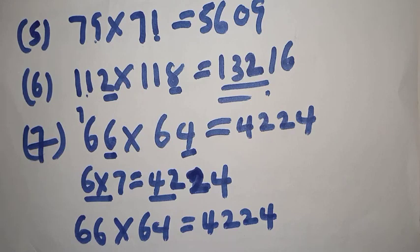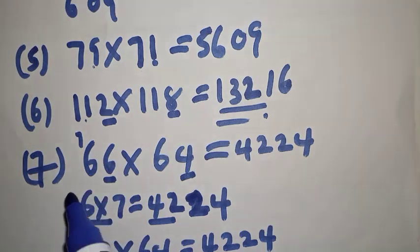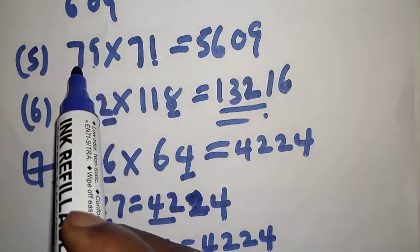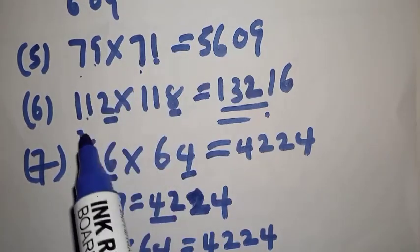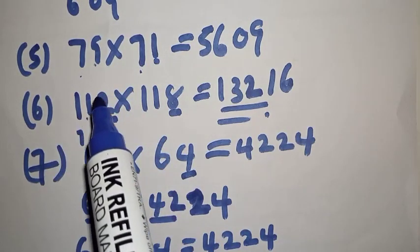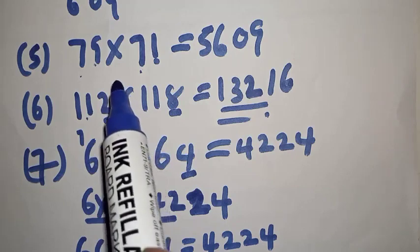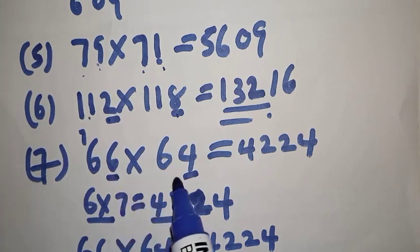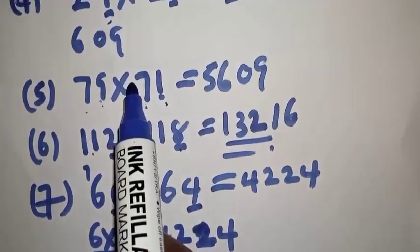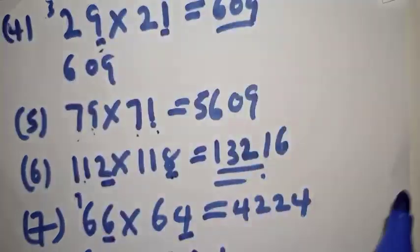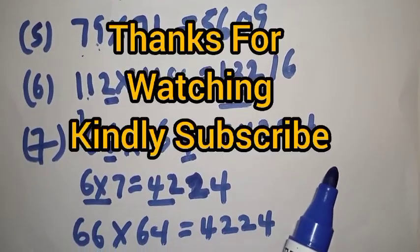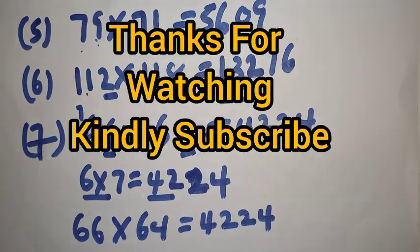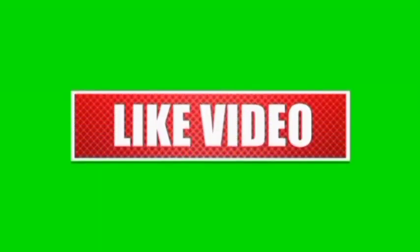To use this method, two conditions are involved. First, we multiply two-digit numbers having the same tens digit. Second, the units digits must sum to 10 — for example: 9+1=10, 2+8=10, 6+4=10. Please don't forget to like, share, comment, and subscribe. Thank you!